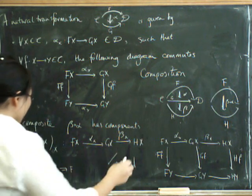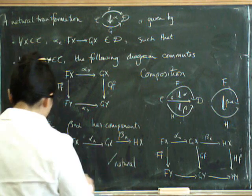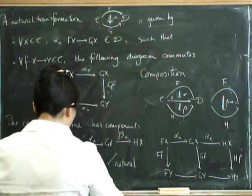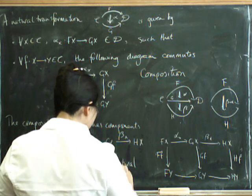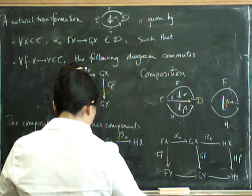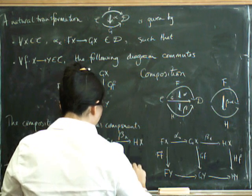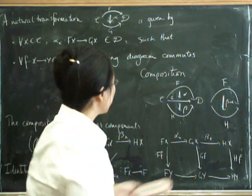So, of course, the components are going to be the identity in the category D. So the identity has components, the identity on F of X, which goes from F of X to F of X.